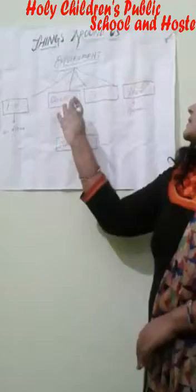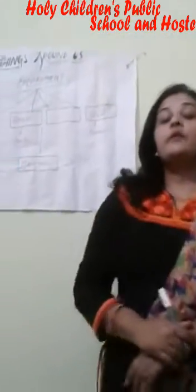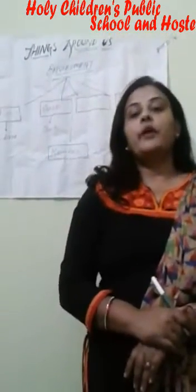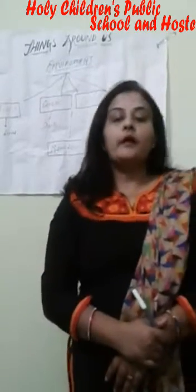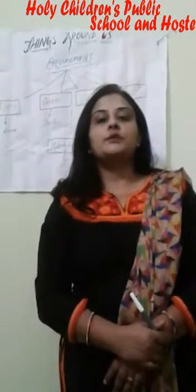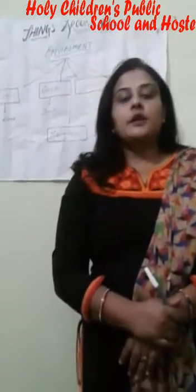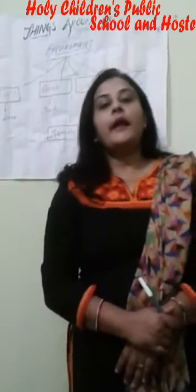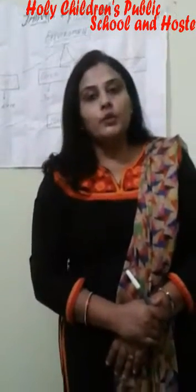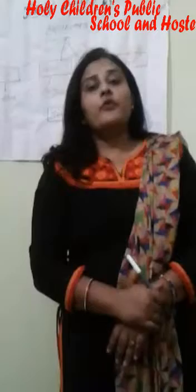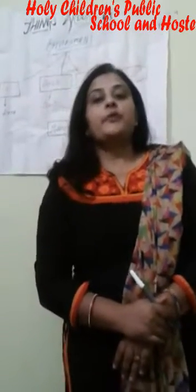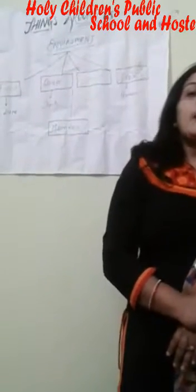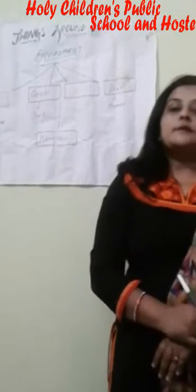The next topic is oceans. About 75.1% of the Earth's surface is covered with water. There are five oceans: Pacific Ocean, Arctic Ocean, Antarctic Ocean, Indian Ocean, and Atlantic Ocean. Evaporation of ocean water leads to rainfall, and this is part of the water cycle.